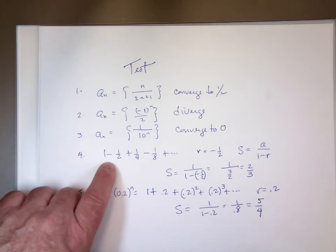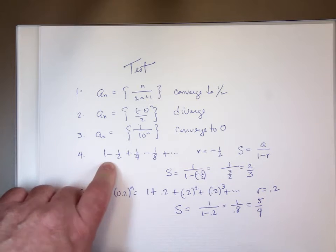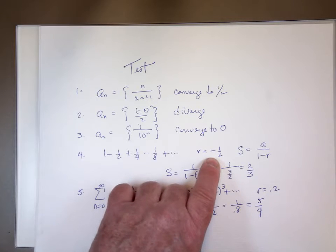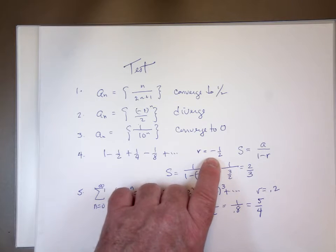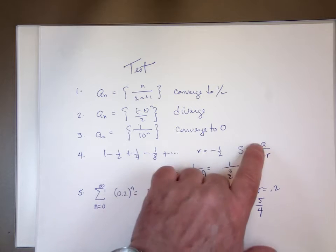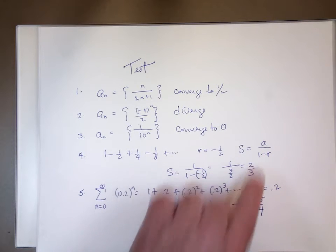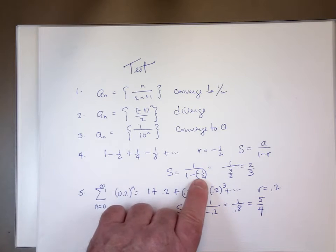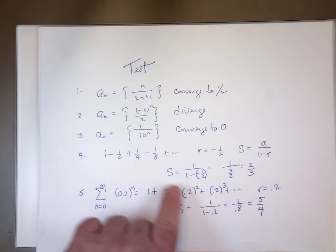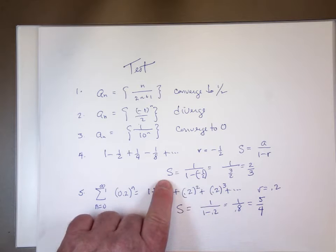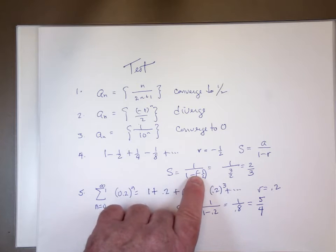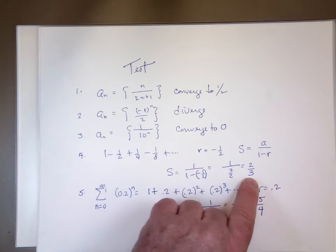The geometric series has ratio r equal to negative one-half. Since its absolute value is less than 1, the series will converge. The sum will be a over 1 minus r. Here a is 1 and r is negative one-half. Therefore, the sum is equal to 1 over three-halves — that is, 1 minus negative one-half — or two-thirds.